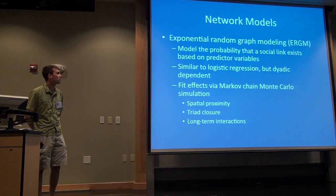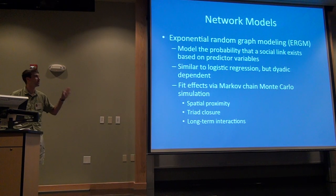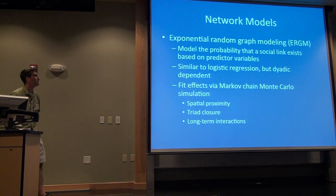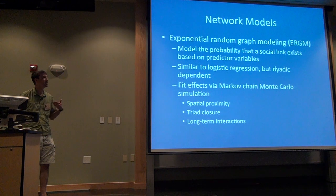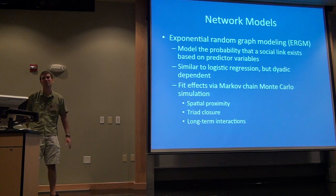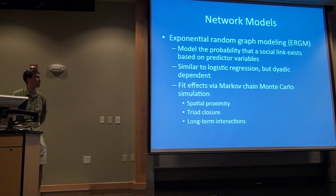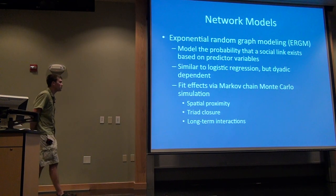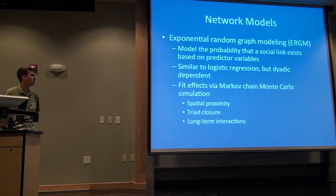The technique I used is called exponential random graph modeling, or ERGM for short. This comes from the social sciences, which are much more advanced in their analyses of social networks. It's very similar to logistic regression — essentially it's trying to model the probability that a social link exists based on a set of predictor variables. The key difference is that in a social network the data points are not independent — they're dyadic dependent — so we can't use typical maximum likelihood methods. We have to use Markov Chain Monte Carlo simulations to fit the model.